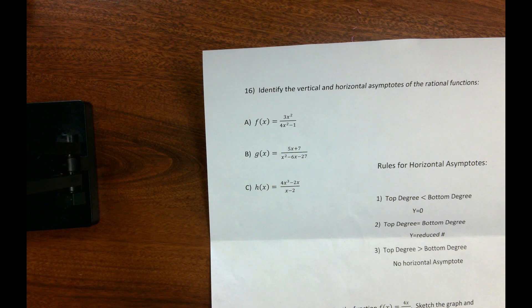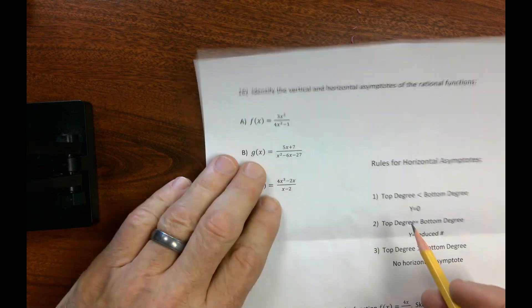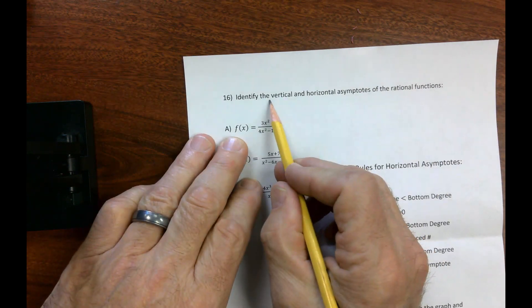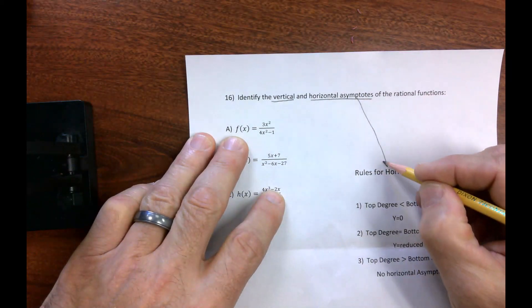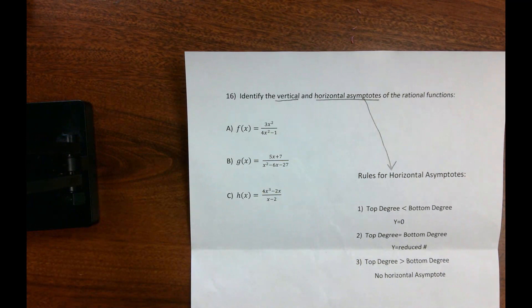In addition to the actual review, number 16, number 17, identify the vertical and horizontal asymptotes. Now notice, for the horizontal asymptote, you've got these rules. I'll do that in a second.